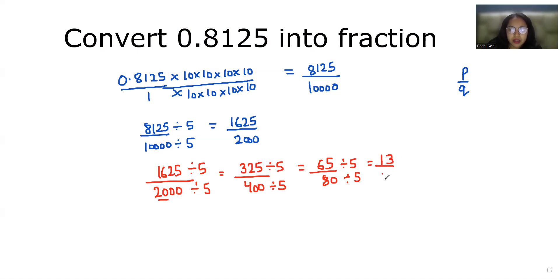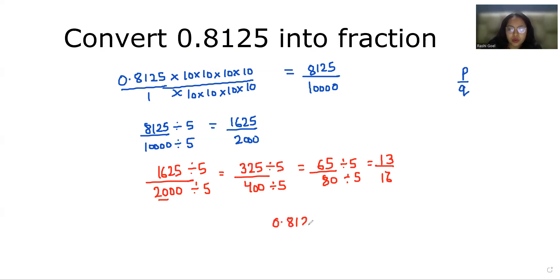Dividing again by 5: 65 divided by 5 gives 13, and 80 divided by 5 gives 16 — giving us 13 by 16. Now 13 is a prime number and 16 and 13 do not share any common factor, so we leave it here. So we can say that 0.8125 in fraction form is 13 by 16.